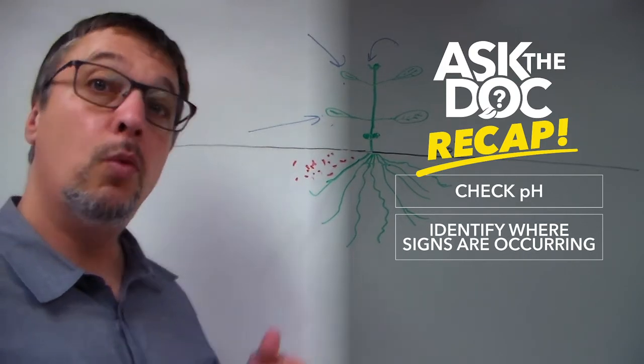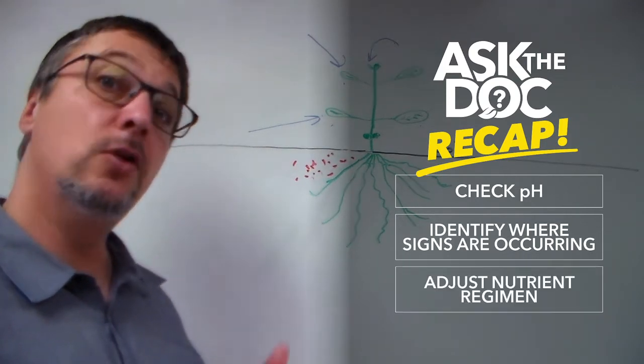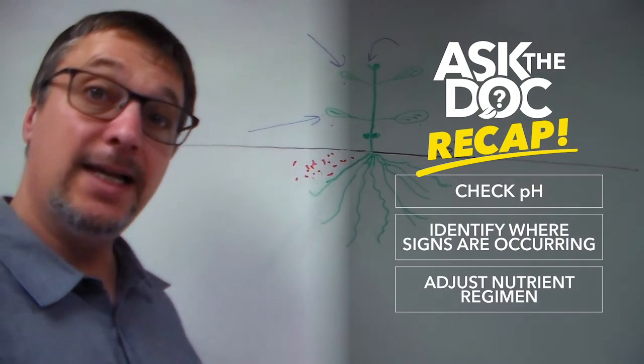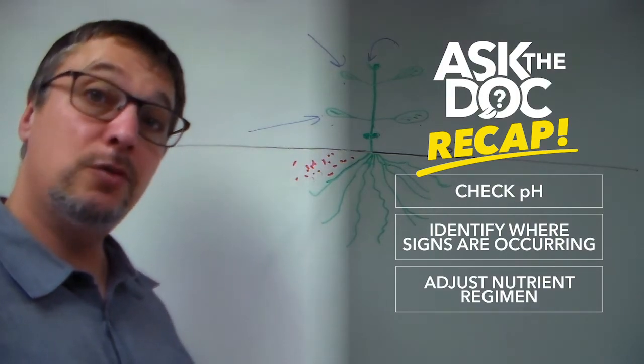Once you figure out what type of deficiency it is, look at your fertilizer and see if it's lacking in any of these nutrients. When you add that nutrient to your solution, you should fix the problem.